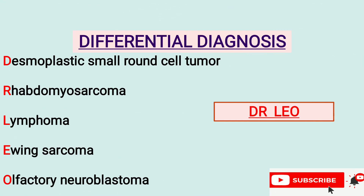Differential diagnosis: you can learn the differential diagnosis using the mnemonic Dr. Leo. D — Desmoplastic small round cell tumor; R — Rhabdomyosarcoma; L — Lymphoma; E — Ewing sarcoma; O — Olfactory neuroblastoma.